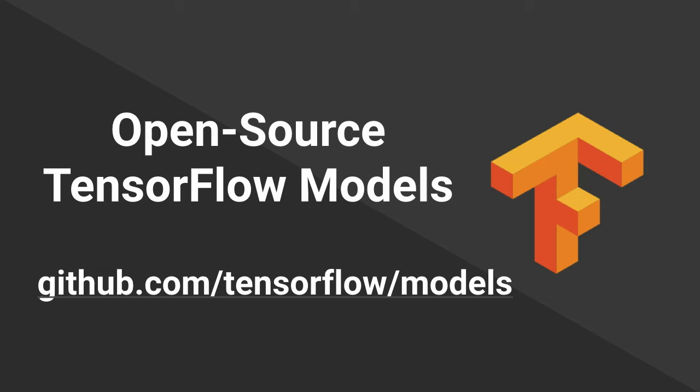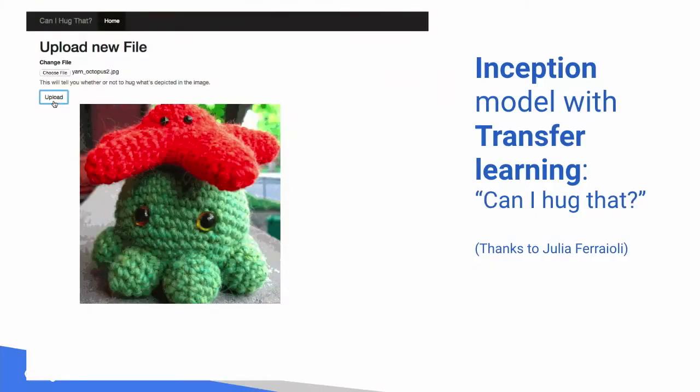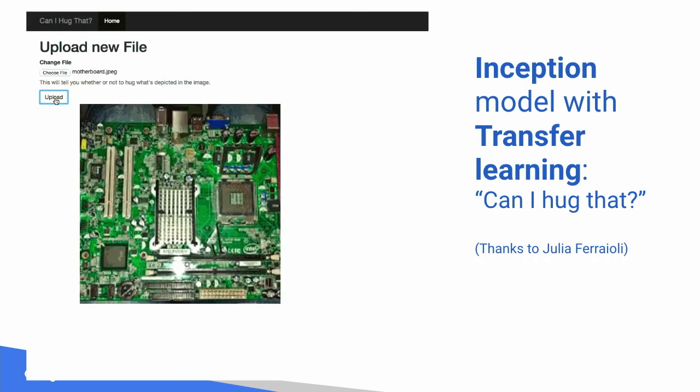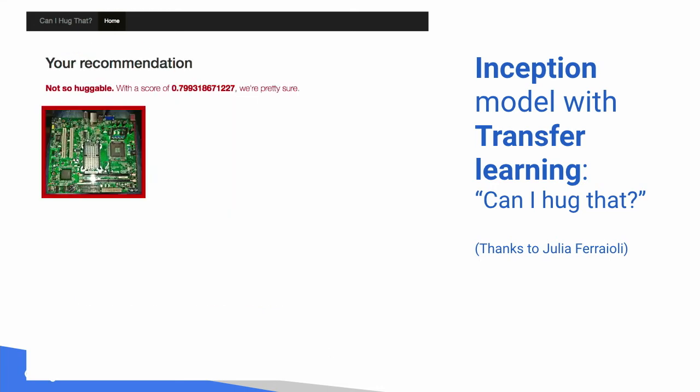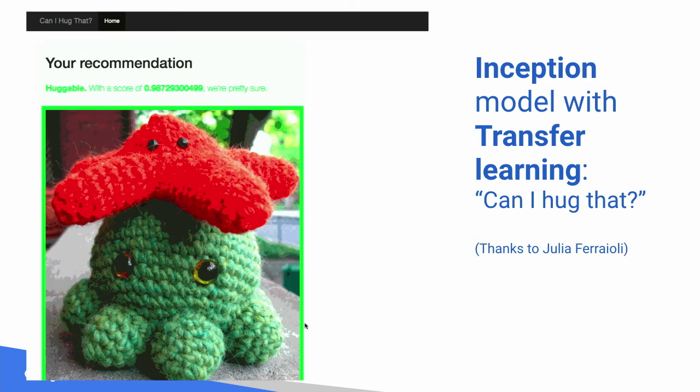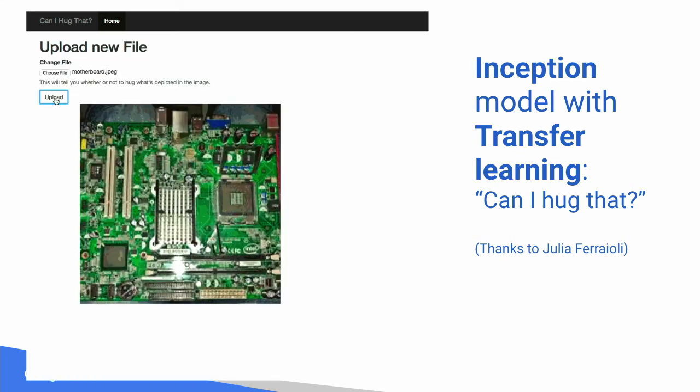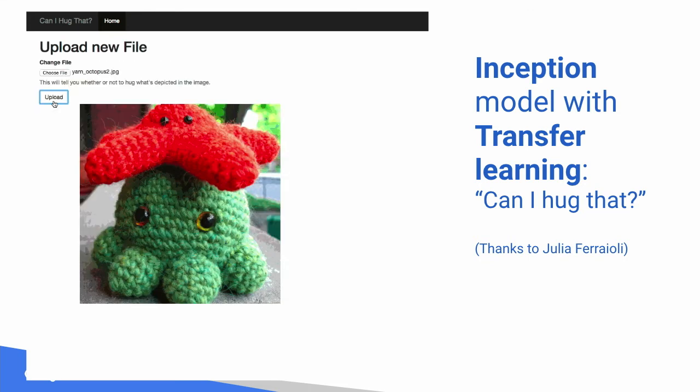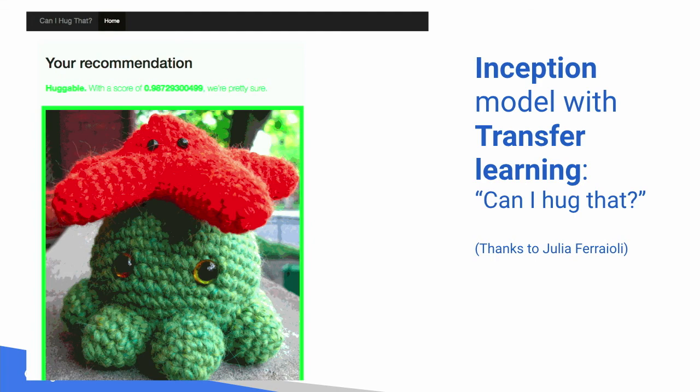We've open-sourced a large number of TensorFlow models, some just in the last few weeks — you heard about a bunch of fun ones from Doug's talk as well. A neat thing about many of these models is that you can use them for transfer learning, essentially fine-tuning them on your own data. Suppose you wanted to build an app that recognized whether an object was huggable — you'd have positive training instances like puppies and pillows, and negative ones like hacksaws and exacto knives. You can use that training data and do transfer learning, bootstrapping from the open-source Inception image classification model to train a new model.